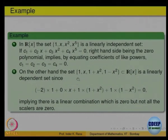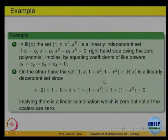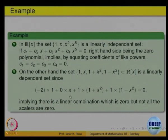So let us look at this. I am looking at all polynomials now — the polynomials 1, x, 1 plus x squared, and 1 minus x squared. It is a linearly dependent set. Why dependent? If I want to show it is dependent, some linear combination is 0 where not all the coefficients are zero. Here: 1 times (−2) times 1, plus 0 times x, plus 1 times (1 plus x squared), plus 1 times (1 minus x squared) equals 0, and 1 and −2 are not 0, so that is a linearly dependent set.